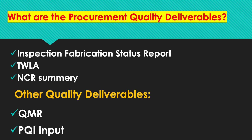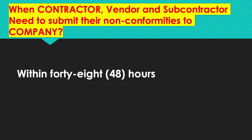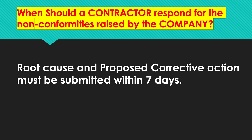When does a contractor or vendor or subcontractor need to submit their non-conformities to the company? Within 48 hours officially. When should a contractor respond to non-conformities raised by the company? Root cause and proposed corrective action must be submitted within seven days.